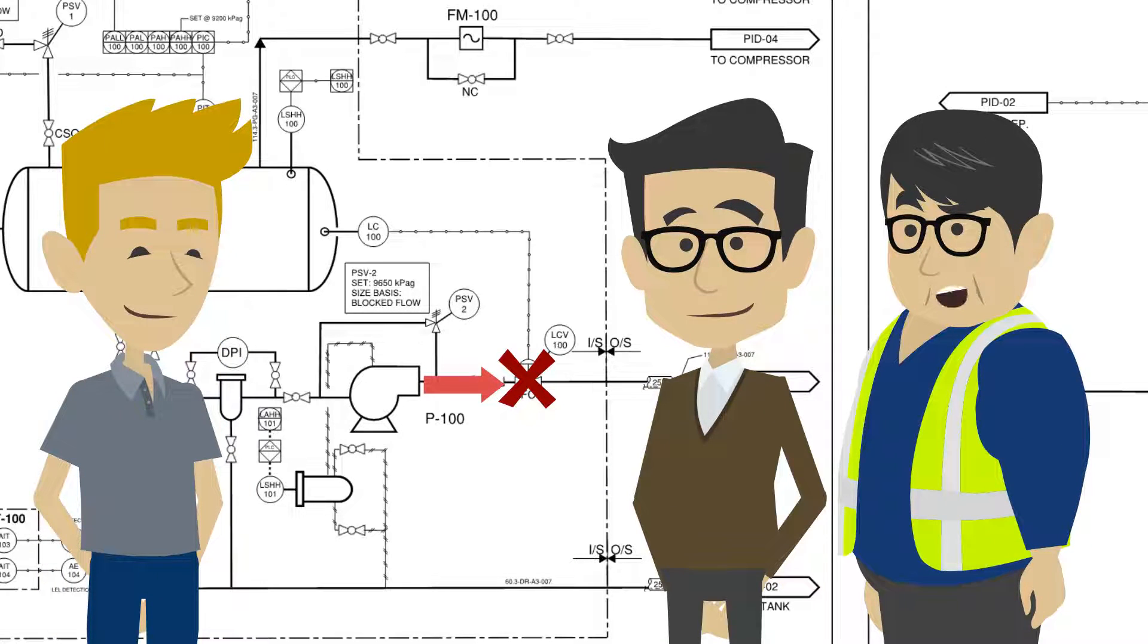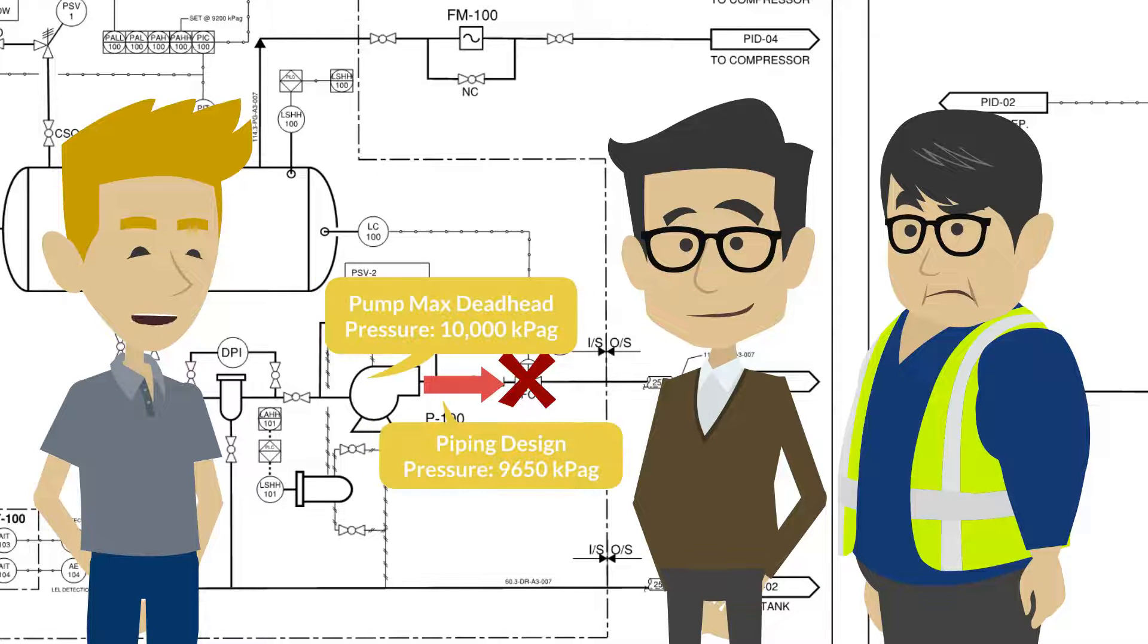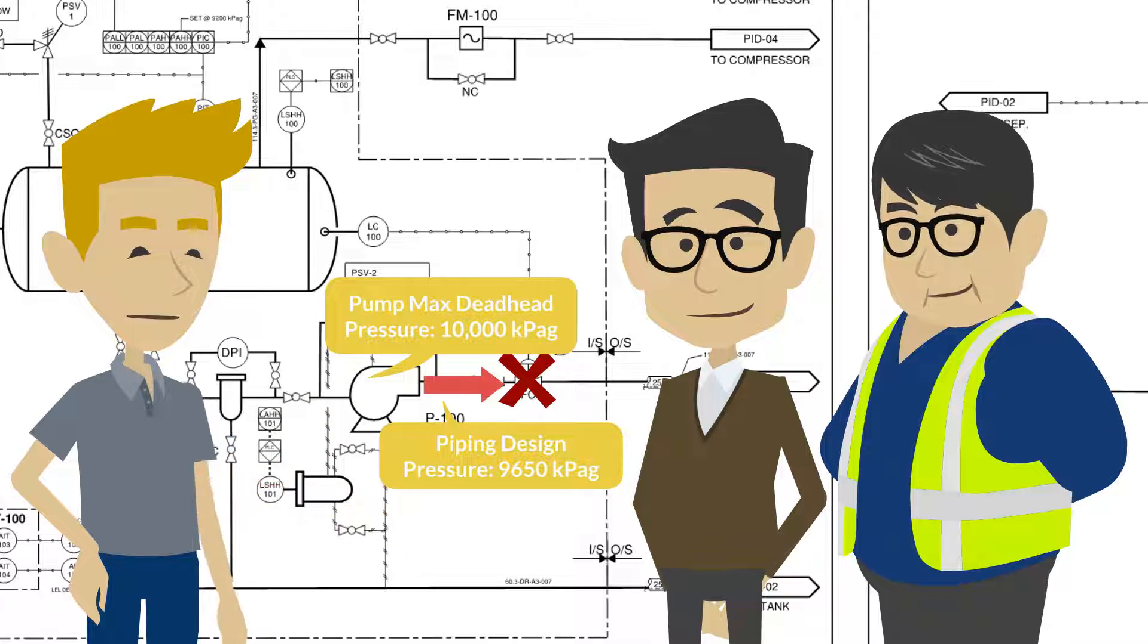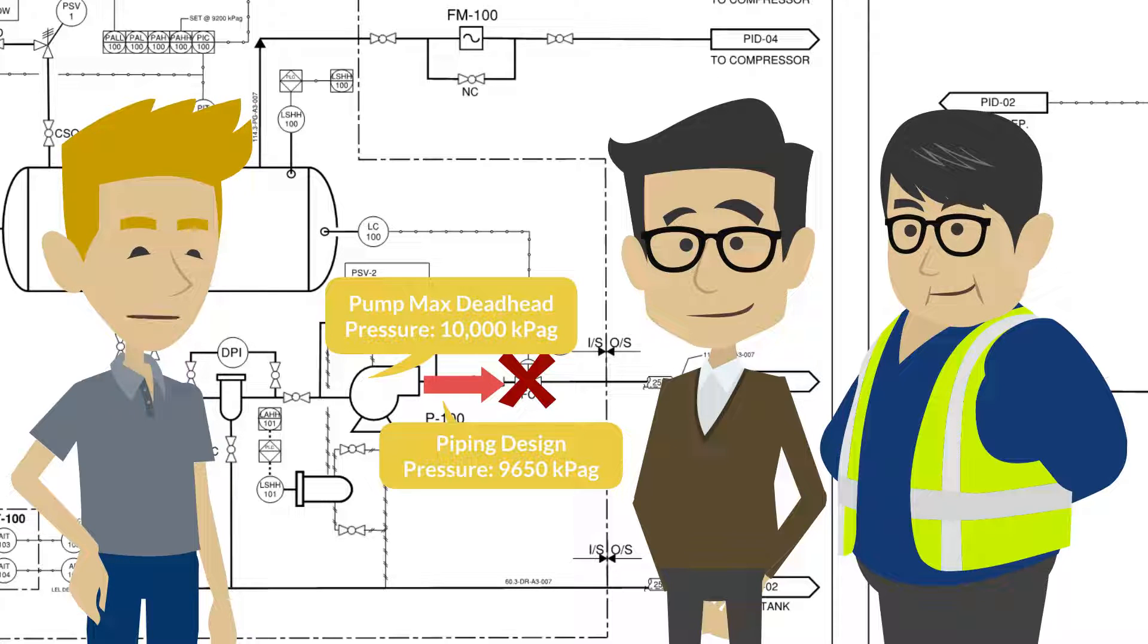Wait, how can closing LCV-100 overpressure piping? The pump can generate above 9,650 kPaG when the discharge is blocked. By closing LCV-100, there is a potential to overpressure the pump discharge piping. Great.